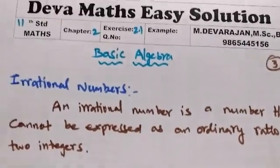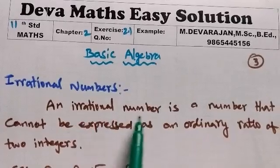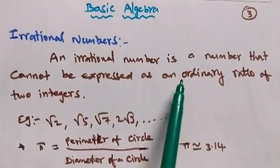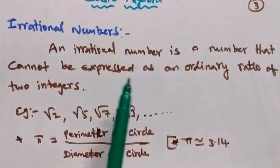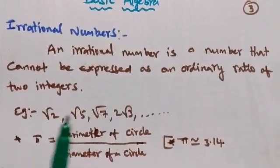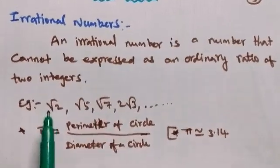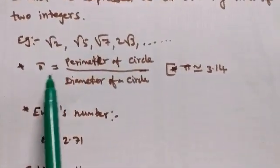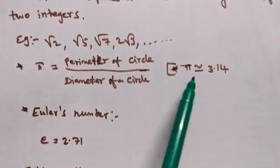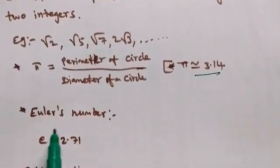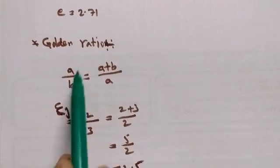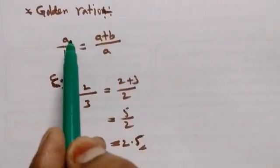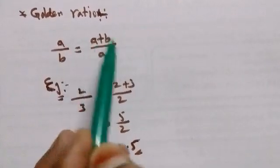Now irrational numbers. An irrational number is a number that cannot be expressed as a ratio of two integers. Pi is also an irrational number — it is the circumference of a circle divided by its diameter, with value approximately 3.14. Euler's number E is approximately equal to 2.7. The golden ratio A by B equals A plus B by A is also an irrational number.